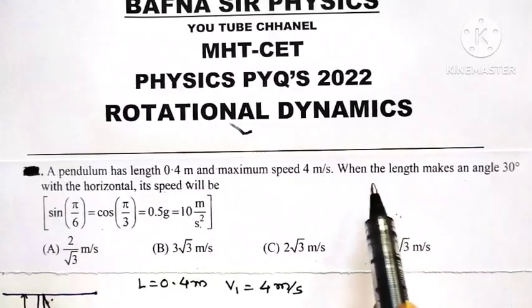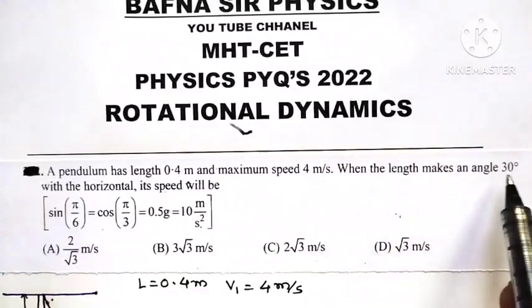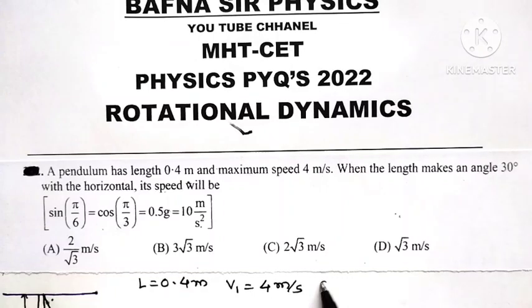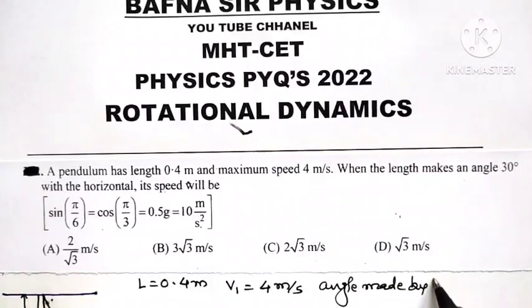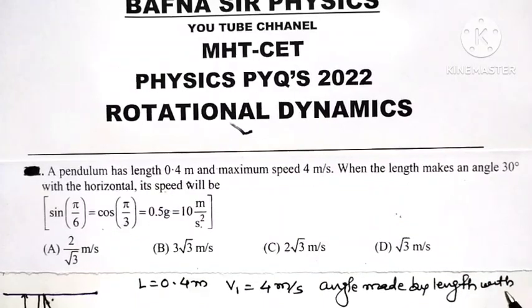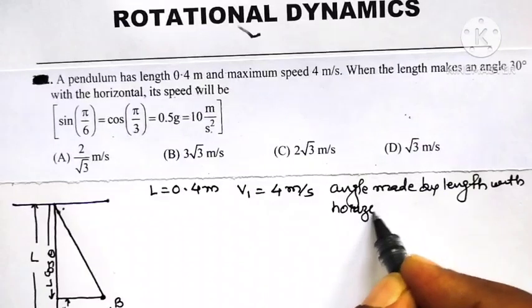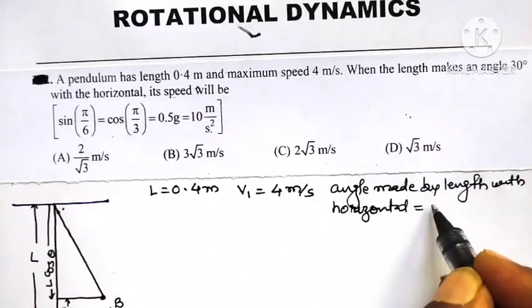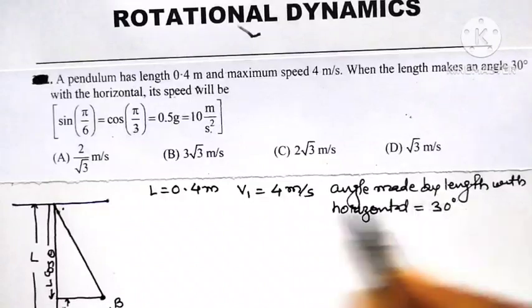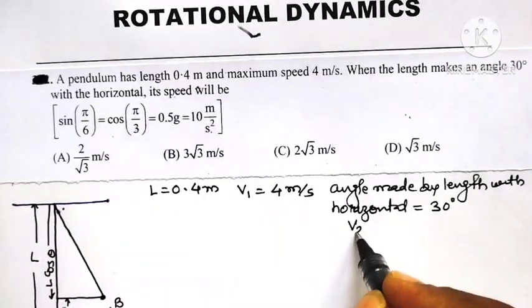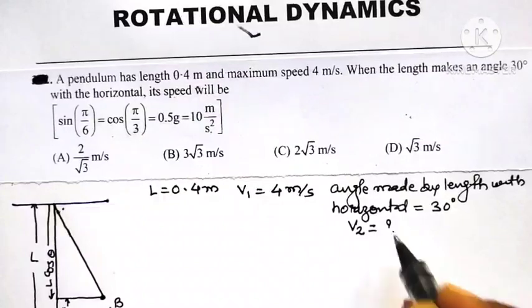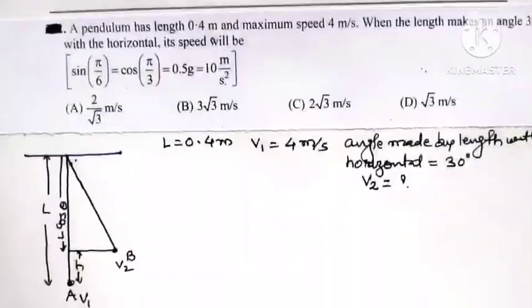When the length makes an angle of 30 degrees with the horizontal, the angle made by length with horizontal is equal to 30 degrees. Then its speed will be the speed of pendulum when it is at that position.